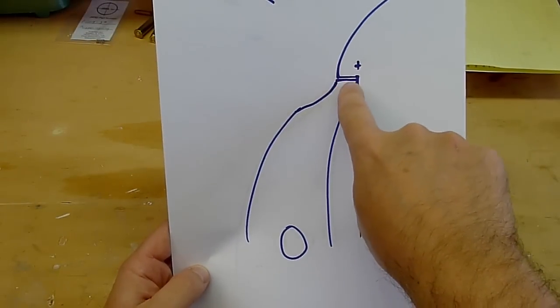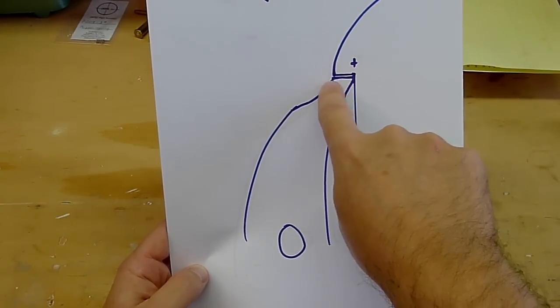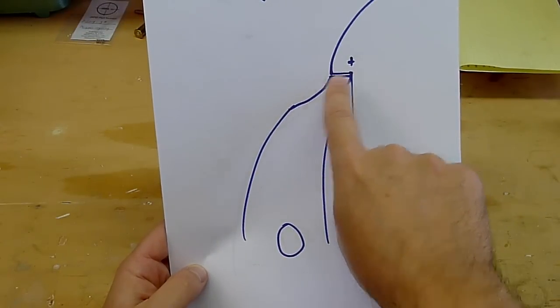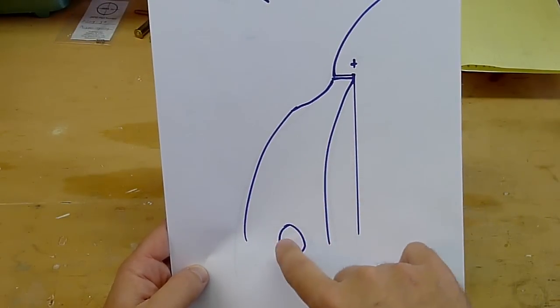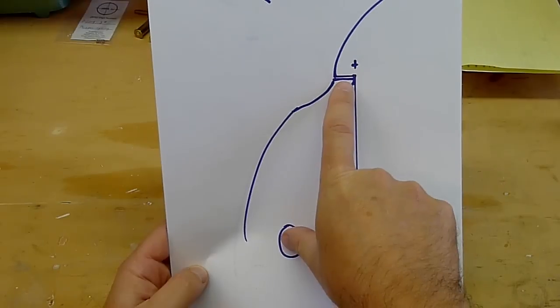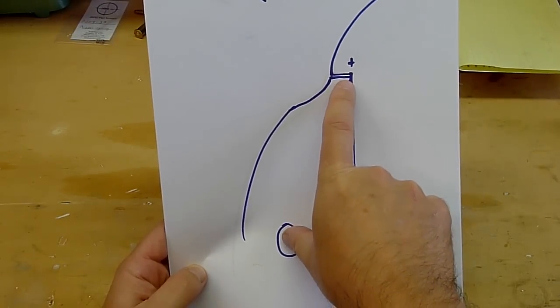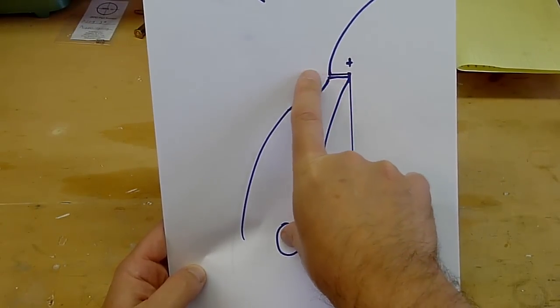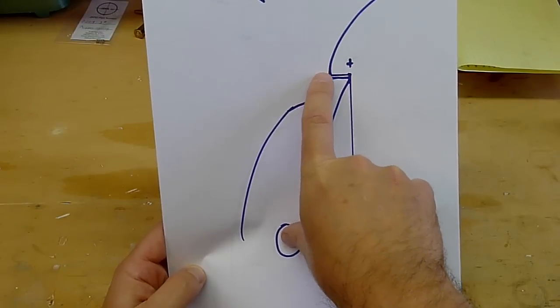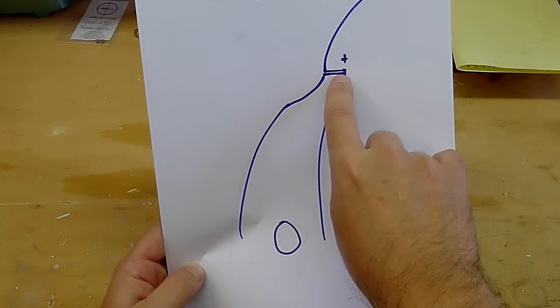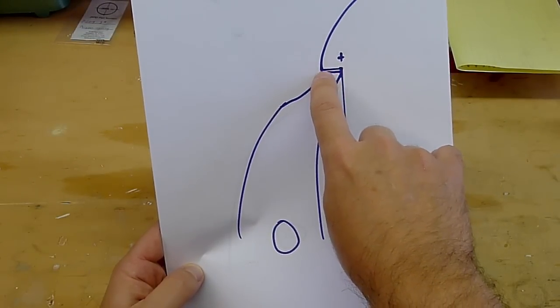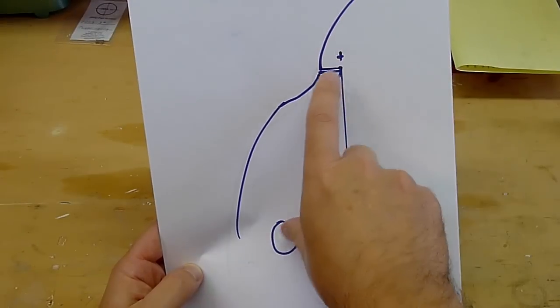This is what's called a positive sear angle. Now, what happens in this case, and it's exaggerated quite a bit, when you squeeze the trigger and the sear moves this direction, it moves on an arc like my finger is showing here. So this part of the sear actually has to push this part of the hammer up, out of the way.